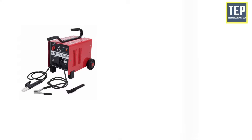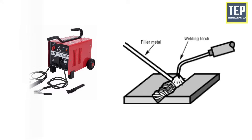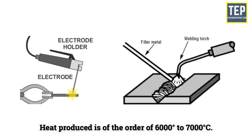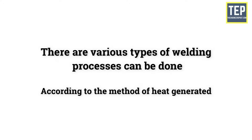A welding machine is used to create the heat and apply the filler metal. The filler metal is supplied to form the joint, either from the electrode itself or by filler material. The temperature of the heat produced is of the order of 6000 to 7000 degrees Celsius. There are various types of welding processes that can be done according to the method of heat generated.